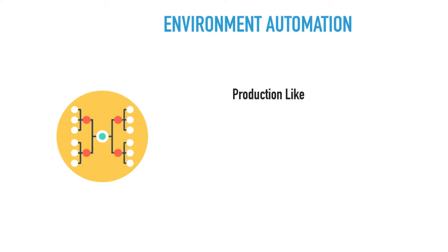Talking about environment automation: a dev environment should be production-like. One of the common issues is not having dev-prod parity, where developers may have their own version of local environments and everything works there, but when it goes to staging or production things start breaking. The reason for that is environment inconsistency.